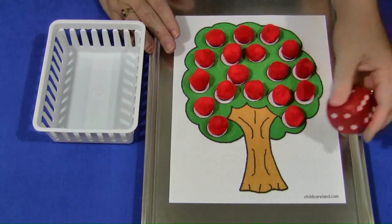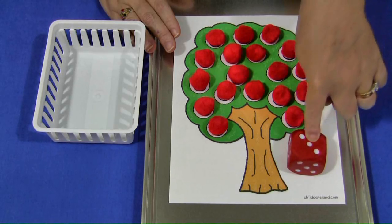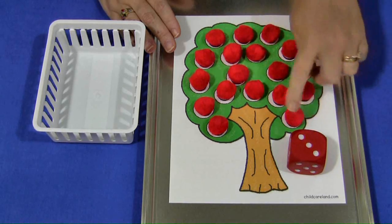The child would roll the dice. I don't have much room to roll the dice here for the video. But whatever number is on the die is what they would pick off. So there's a 3 here.